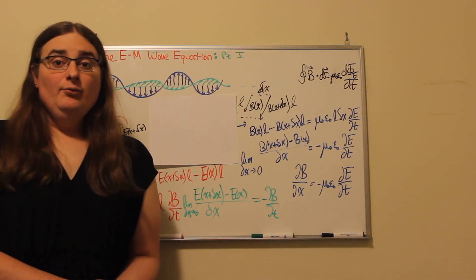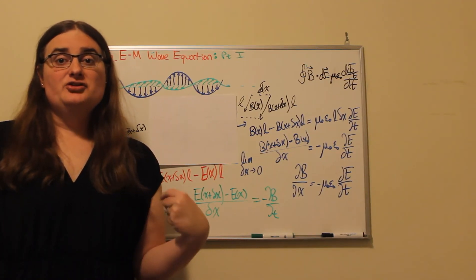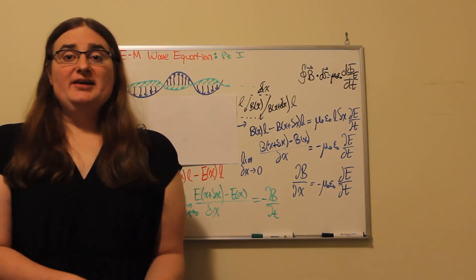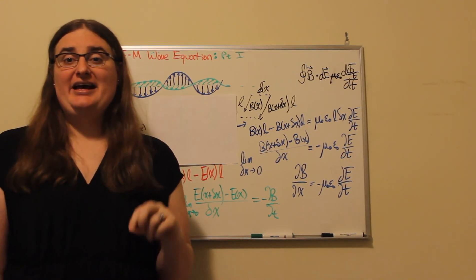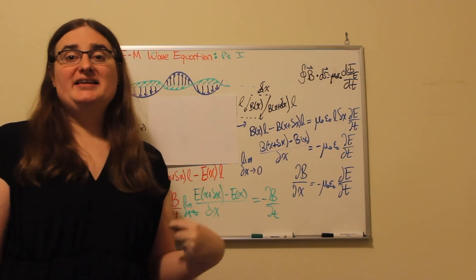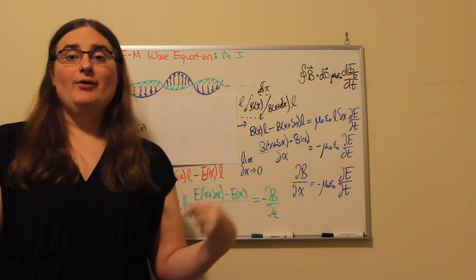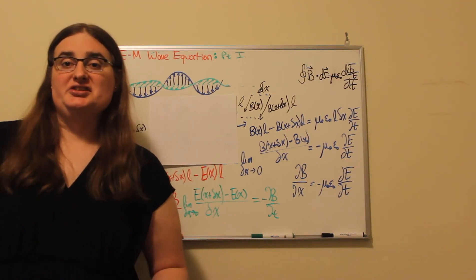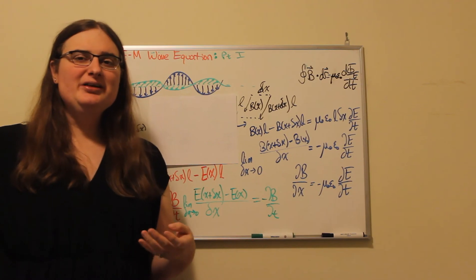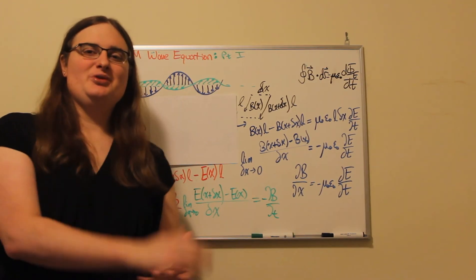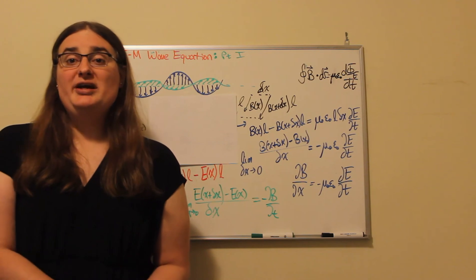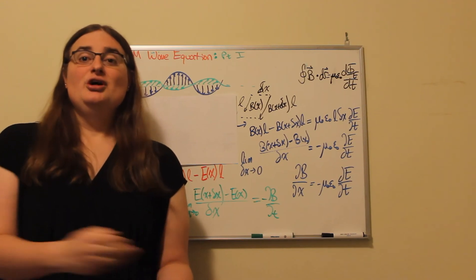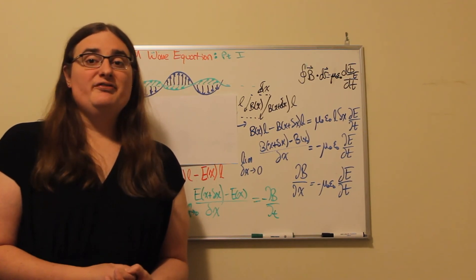I want to start a two-part discussion about how the equations we call Maxwell's equations show us that electricity and magnetism generate electromagnetic waves — a proper solution to Maxwell's equations. It's the work Maxwell did that earned him credit for a combination of equations he was only a small part of, in conjunction with Gauss, Lorentz, Ampere, and Faraday.